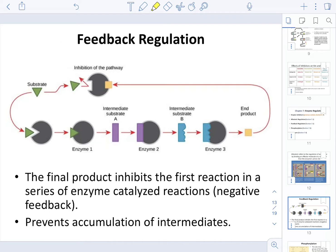The next type of regulation is feedback regulation. Many pathways in metabolism utilize this type of regulation to control and gauge what to do depending on the environment of the cell. The main idea is that the final product produced in an enzymatic reaction goes back and inhibits the first few steps in the series of catalytic events. This prevents the accumulation of intermediates in a pathway.